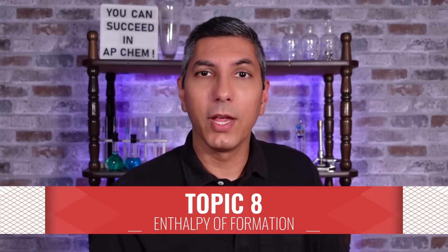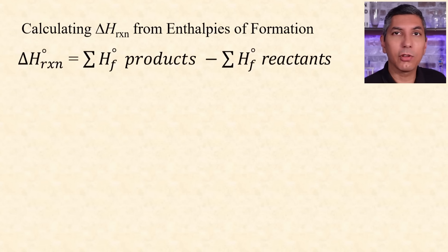Another way to solve for delta H is to use the standard enthalpies of formation for the substances in a reaction. The change in enthalpy for any reaction is equal to the sum of the enthalpies of formation of all the products minus the sum of the enthalpies of formation of all the reactants. So in this reaction, we take the enthalpies of formation for each of the substances